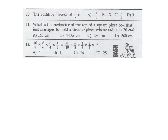The additive inverse of one third. Additive inverse means the value you add to the number to give zero. So calling it x, x plus one-third equals zero, meaning x is negative one-third. Number 10, the answer is A.